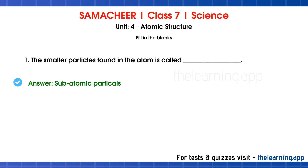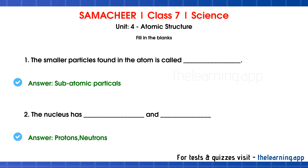Now fill in the blanks. Atoms are made of smaller particles called proton, neutron, and electron — these are subatomic particles. Second question: the nucleus has protons and neutrons. The nucleus is at the center of the atom, and it contains protons and neutrons.